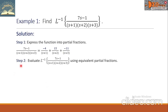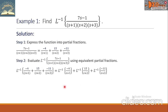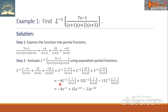Now let us go to Step 2: evaluate our inverse Laplace using equivalent partial fractions derived from Step 1. We will take the inverse Laplace of each fraction separately, moving the numerators in front respectively. Applying the inverse Laplace formula, the final answer is negative 4 times e^(−t) plus 15 times e^(−2t) minus 11 times e^(−3t).